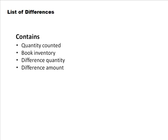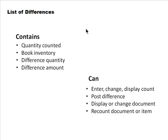When you post the count, the system generates a list of differences containing the quantity counted, the book inventory, the difference quantity, and the difference amount — both quantity and value. One piece difference could mean a million dollars difference in value, so both dimensions are shown. From the list of differences you can enter, change, or display counts, post differences, display or change the document, or request a recount for the whole document or individual items.